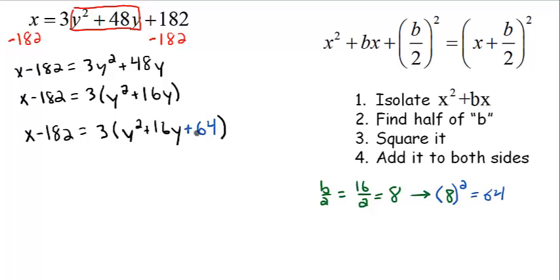Now, it looks like I'm just adding 64 to the right side, but actually, there's a 3 multiplying all these terms. So I didn't just add 64, I actually added 192. If I distribute out this 3: 3y² + 48y + 3 times 64, that's 192. So that's not just adding 64 to both sides, that's adding 192.